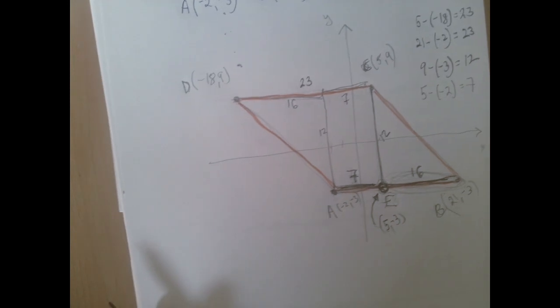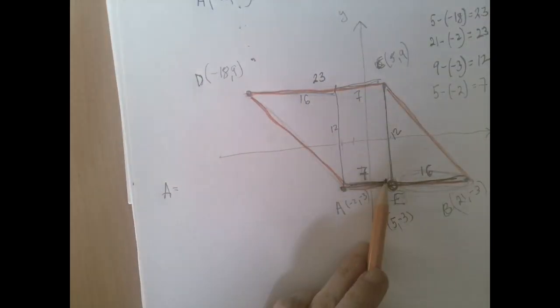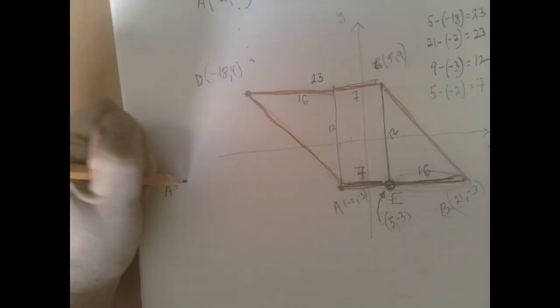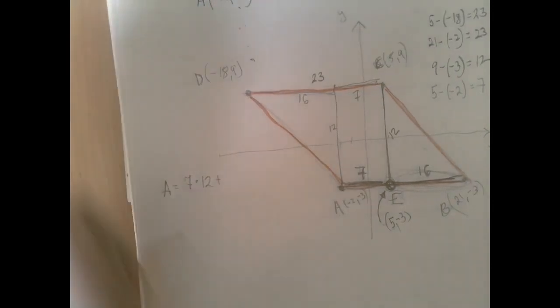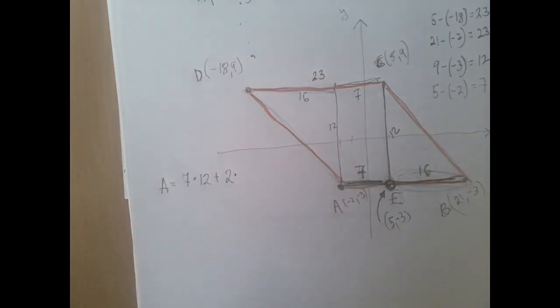And we're ready to compute the area. So the area of the rectangle is, it's a 7 by 12. So it's 7 units by 12 units. And we have two triangles, each of them with area of 1 half, 16 times 12.